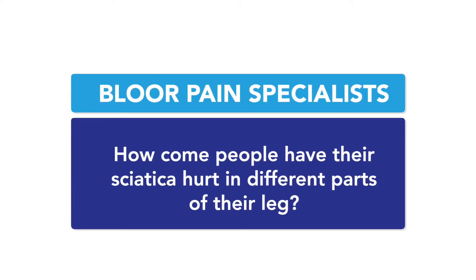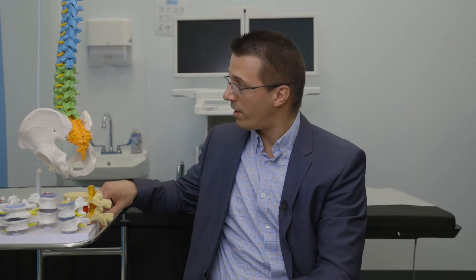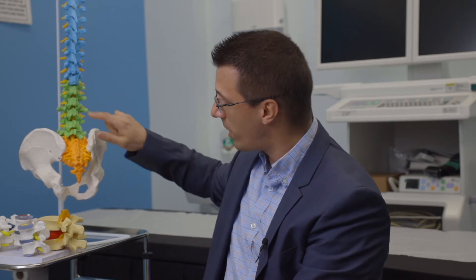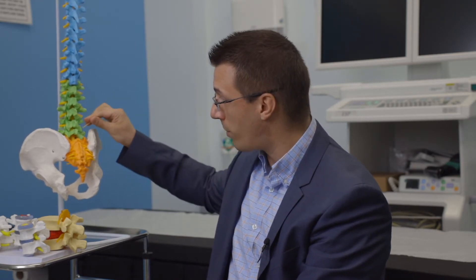How come people have their sciatica hurt in different parts? Well, that's a great and very applicable question. If you think about the sciatic nerve coming from five different roots — L4, L5, S1, S2, and S3 — they come together through the sciatic notch and combine into the sciatic nerve. If L4 is bothered, you're going to feel it in a different place than S1. L4 involves more of the front side muscles and skin going towards the toes, S1 goes more through the calf, and L5 is in between.